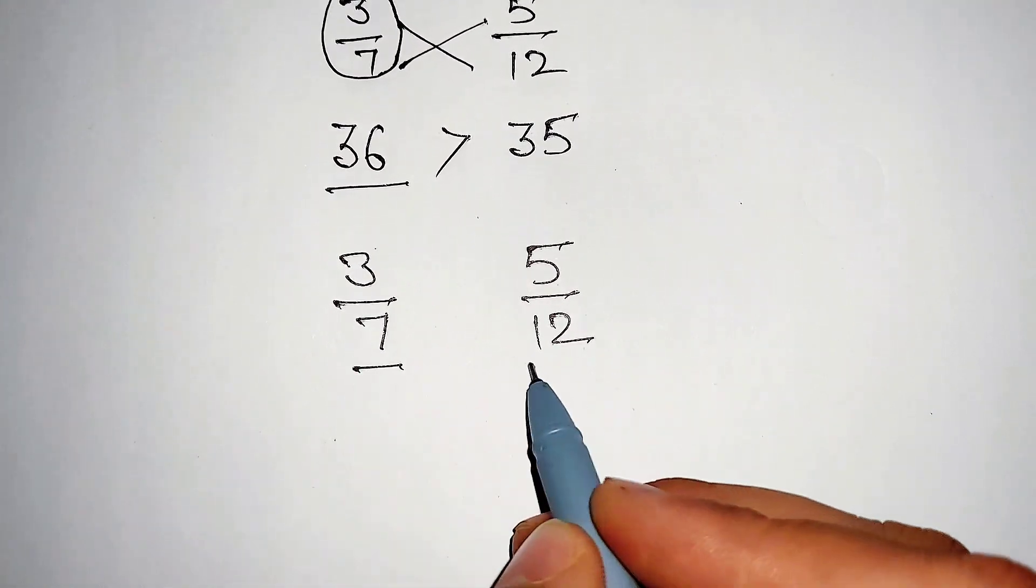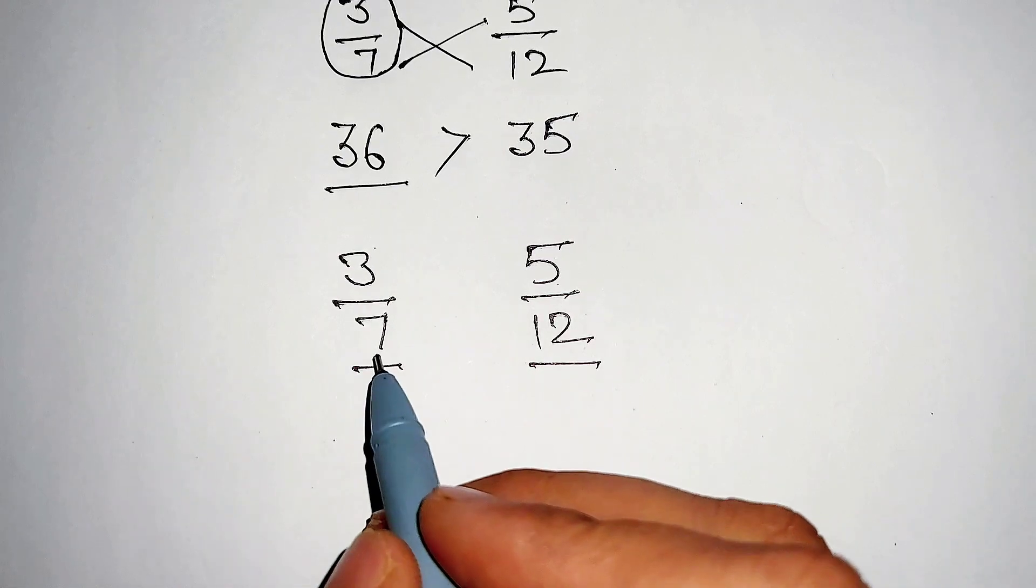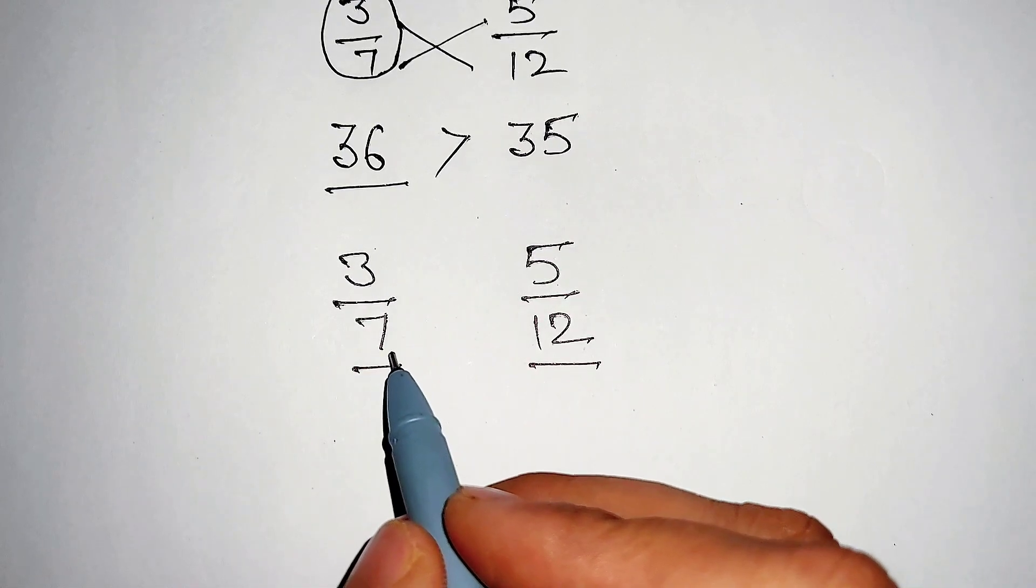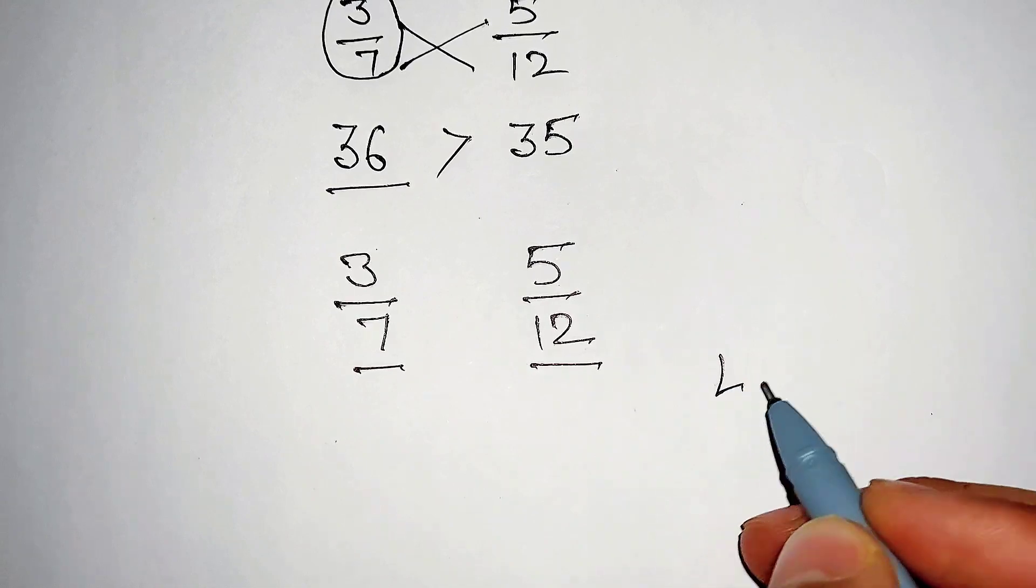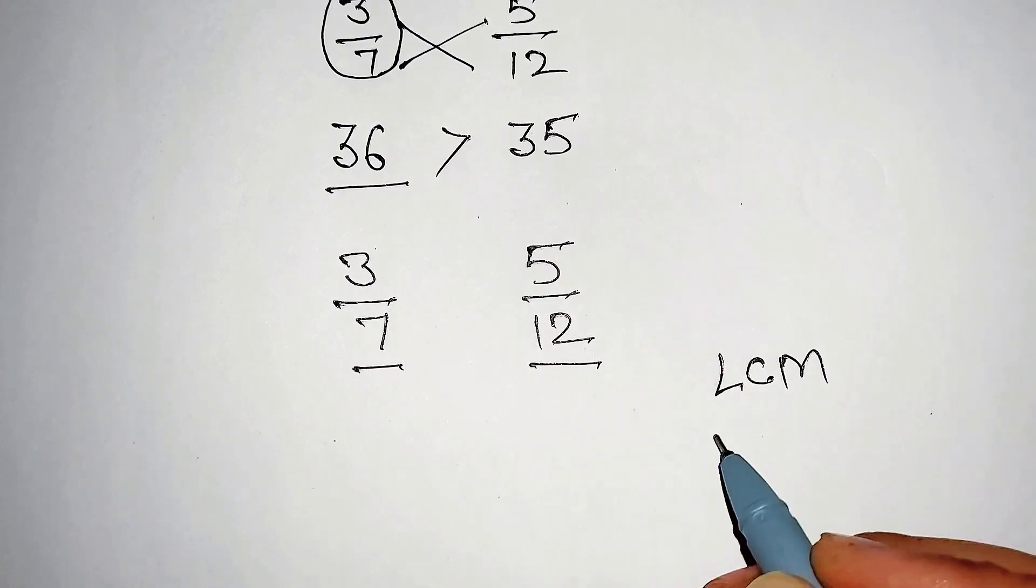3 over 7, if we rewrite this number again, and this number, if we multiply both these numbers by the LCM of their denominator part. Here LCM of their denominator part 7 and 12 is equal to 84.